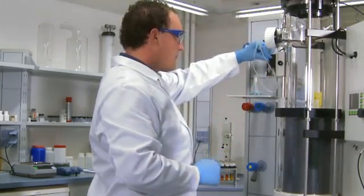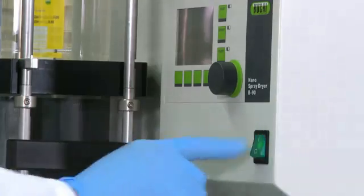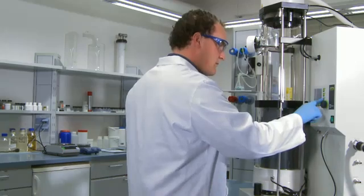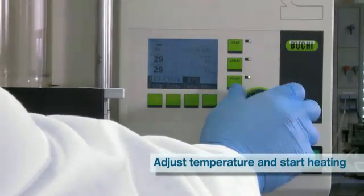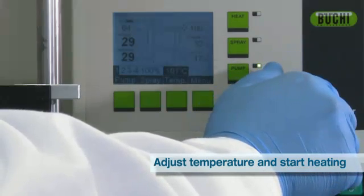Then close the peristaltic pump and turn on the instrument. Adjust the spray gas flow. Adjust the temperature by pressing the temp button and turning the knob. Turn on the heater by pressing the heat button.